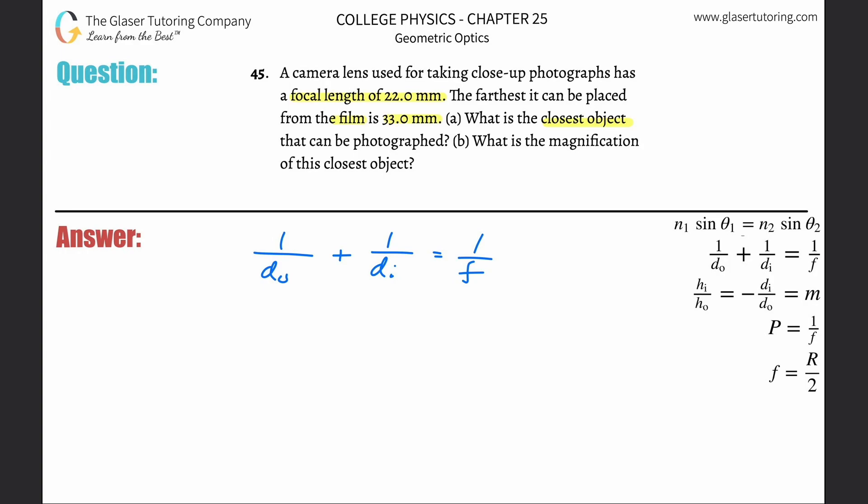I need to solve this for do. Simply subtract this term over to the right-hand side, then do a little cross multiplication. Cross multiply this whole term over and bring it down. There's your solved equation—one over one divided by that focal length.